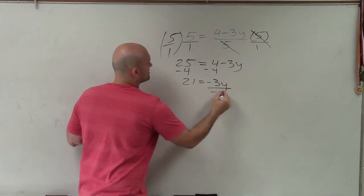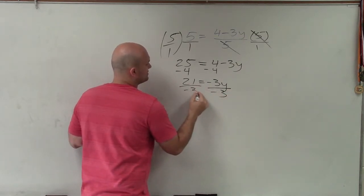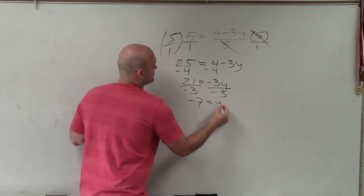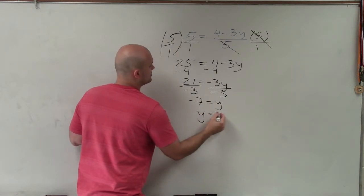Now to solve for y, I divide by negative 3, divide by negative 3, negative 7 equals y, or y equals negative 7.